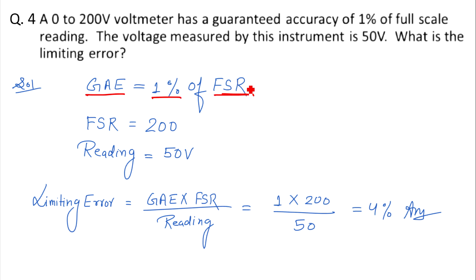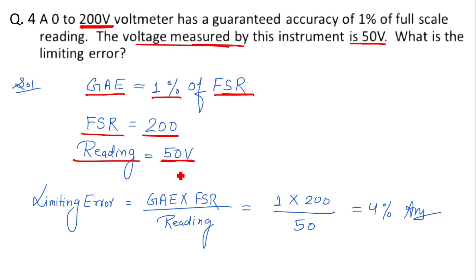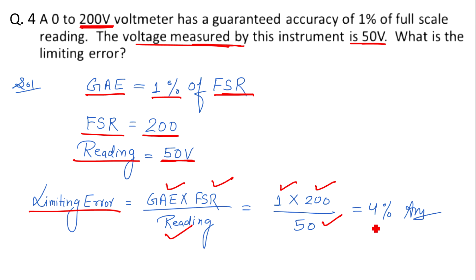We are given: guaranteed accuracy error = 1% of full scale reading. Full scale reading = 200 volts (since the voltmeter measures 0 to 200). The reading taken = 50 volts. The formula is: limiting error = guaranteed accuracy error × (full scale reading / reading) = 1 × (200 / 50) = 4%.